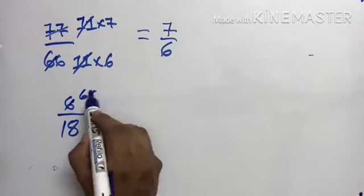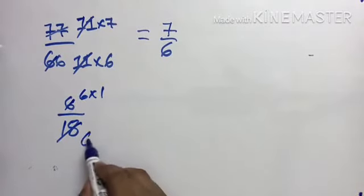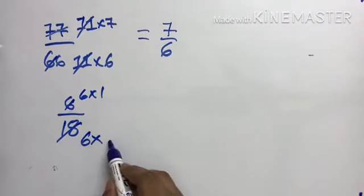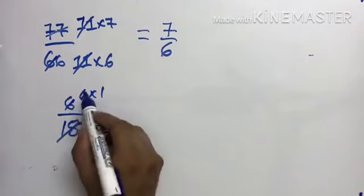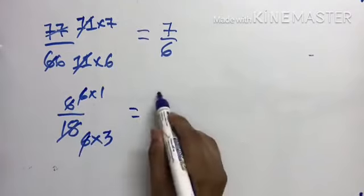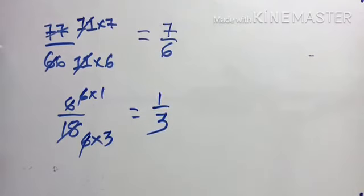6 times 1 is 6. 6 times 3 is 18. 6 and 6 cut. Answer is 1 by 3.